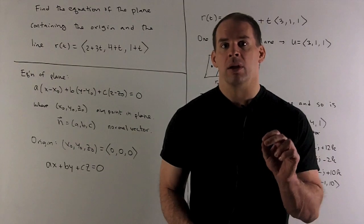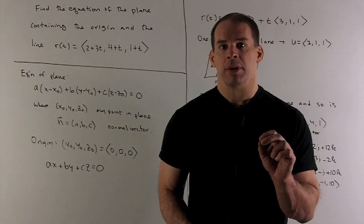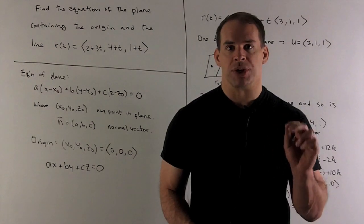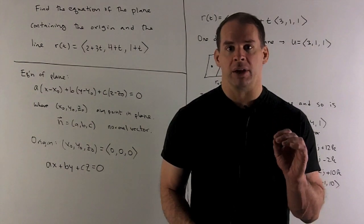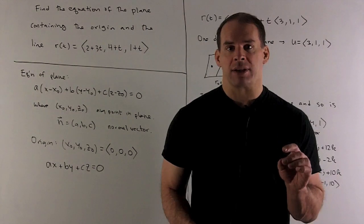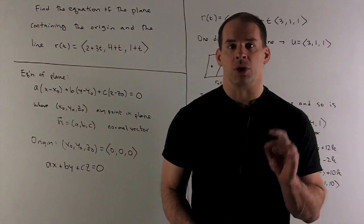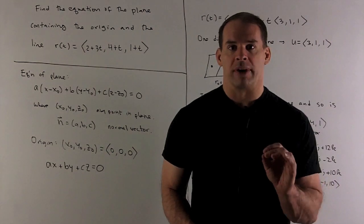We're given that our plane contains the origin, so we can let x0, y0, z0 be (0, 0, 0). And the equation of our plane reduces to ax plus by plus cz equals 0. So all we need to do is find the normal vector.